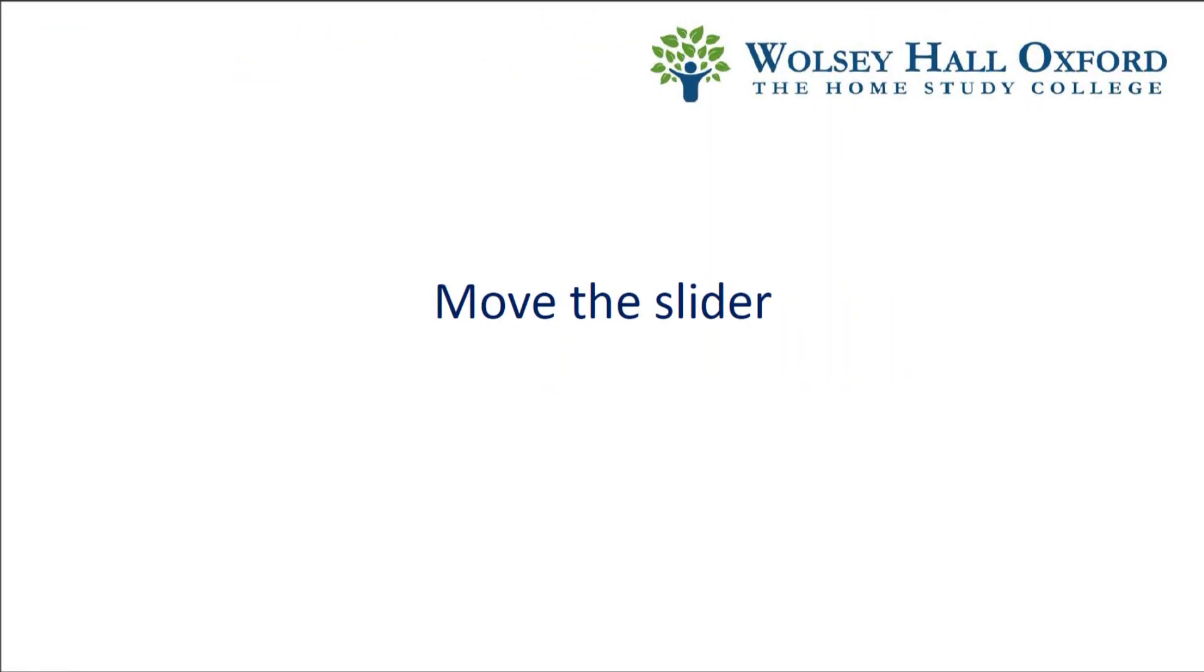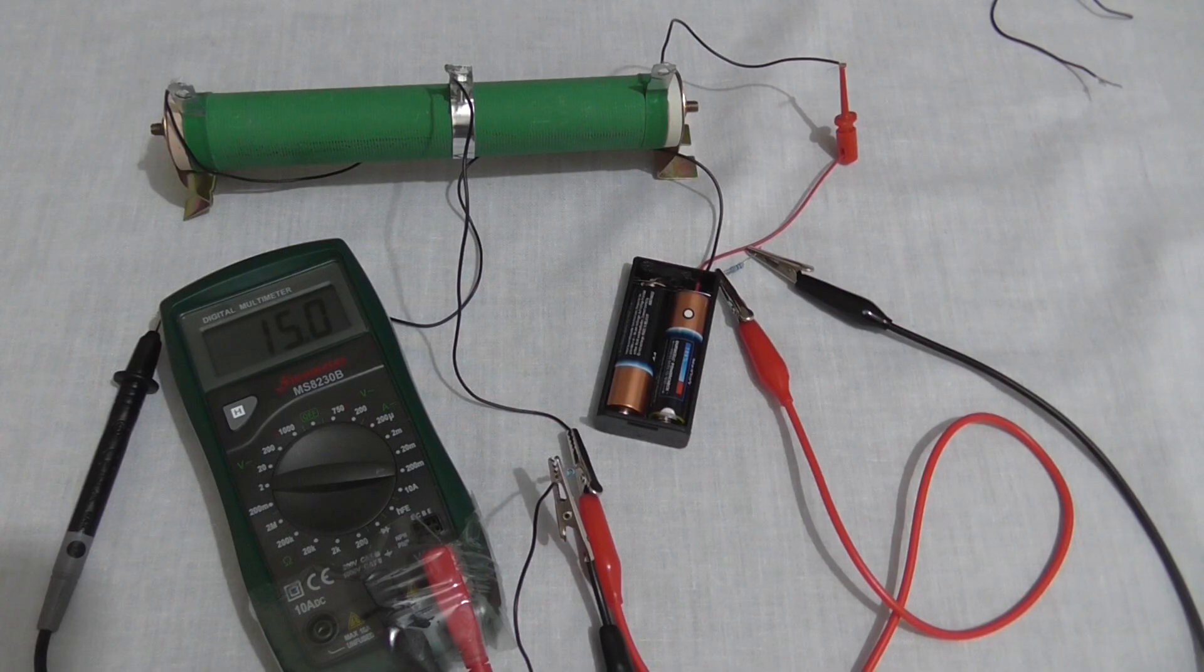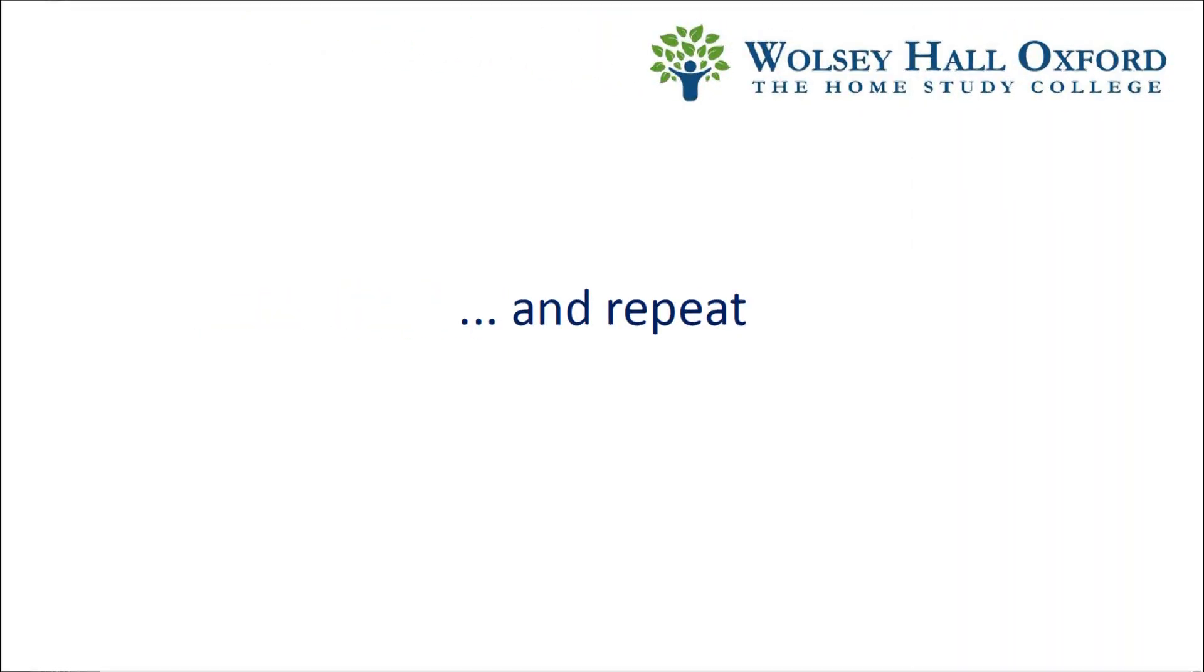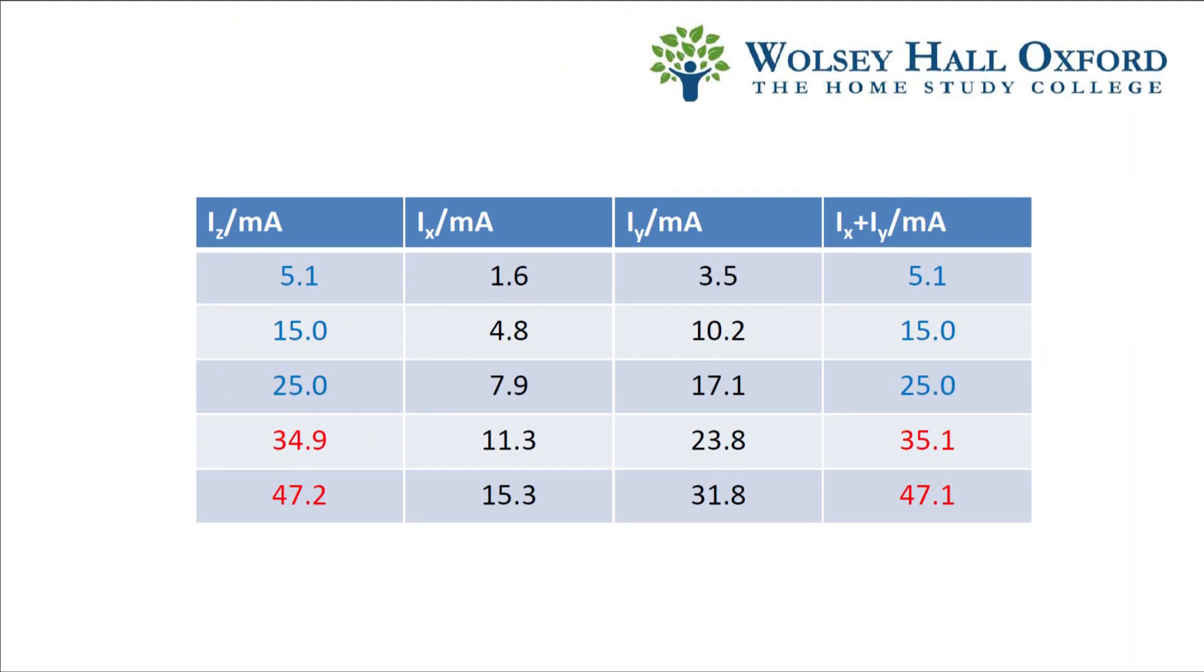To get the next set of readings, the multimeter is moved back to the Z position and the slider is moved along to increase the current to 15 milliamps. Then the readings are taken in the X and Y positions. Repeat this process to get the following results.